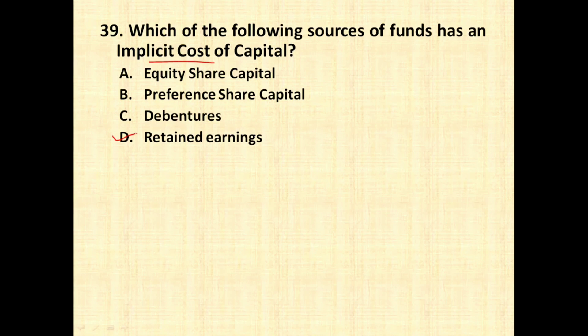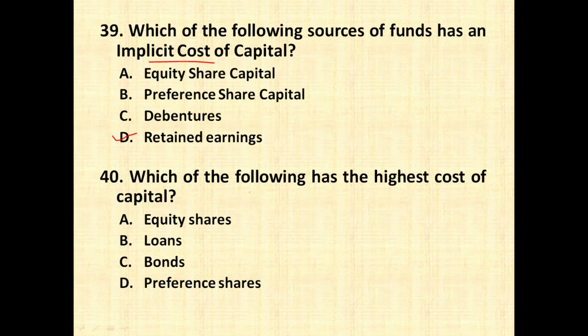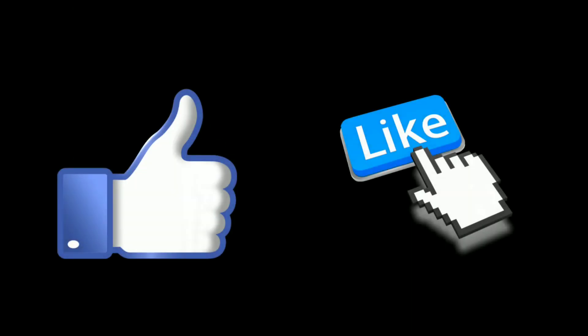The last question: which of the following has the highest cost of capital? Equity share has the highest cost of capital because the risk associated with equity share capital is the greatest — higher than preference share capital, bonds (KD), and loans. Above equity shares, derivatives carry even higher market risk, but among the given options, equity share capital has the highest cost of capital.